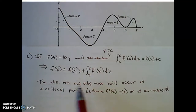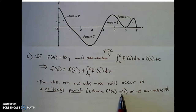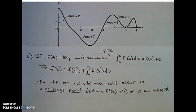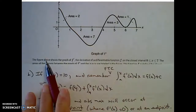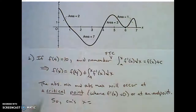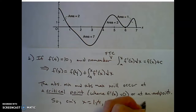The absolute min and the absolute max will occur at a critical point. Critical numbers are where f prime equals 0, or at an endpoint. From the graph, f prime equals 0 at x equals 1, 4, and 6, giving critical numbers x equals 1, 4, and 6. The endpoints are at x equals 0 and 7 on this closed interval.